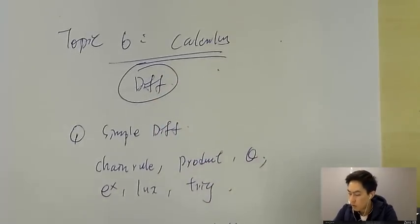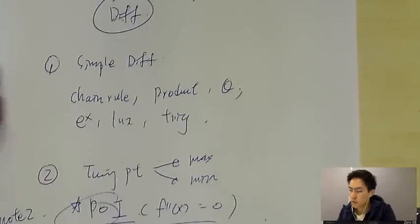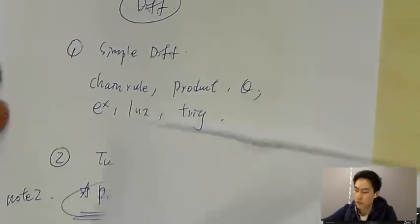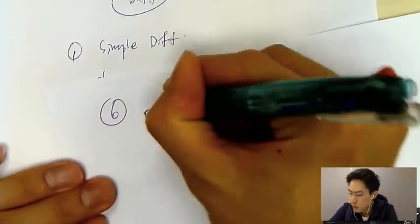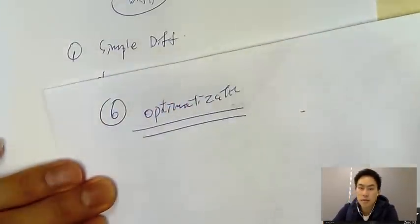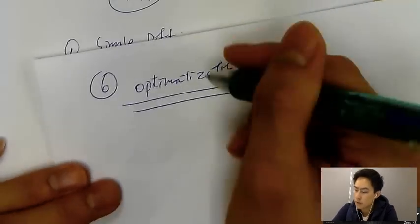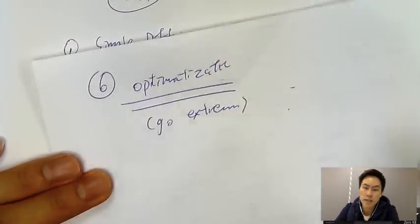Actually, there's one more I forgot to mention. It seldom appears in your IB exam, but you have to learn that, it's in your syllabus. That is what we call optimization. But what does this word mean? Optimization means go extreme. Let's say if you're earning profit for a company, obviously we want to have the maximum profit, right?